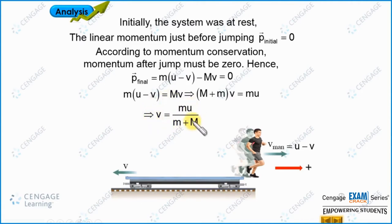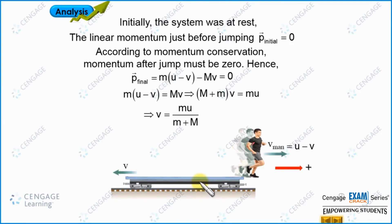We can observe that this velocity — the recoil velocity of the railroad car — is the same as the velocity of a plank when a man walks on it. This is because the same nature of forces act in the system: in both cases there is no external force acting on the system in the horizontal direction. Now let us move to the next illustration.